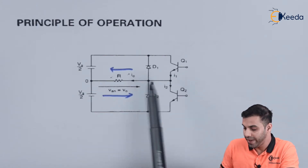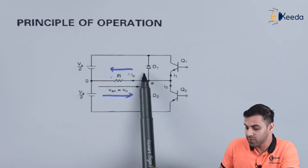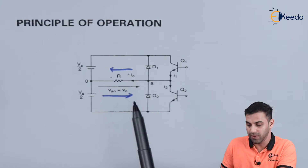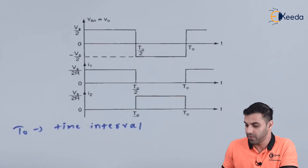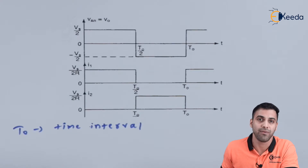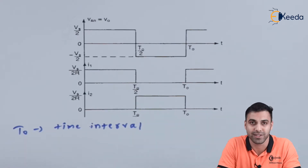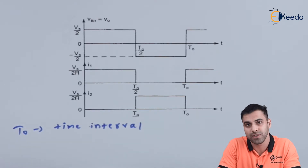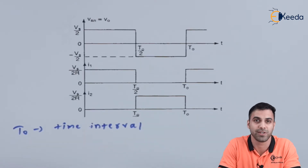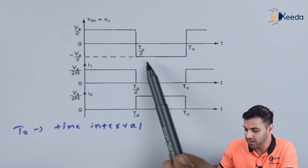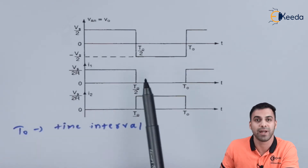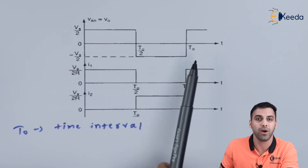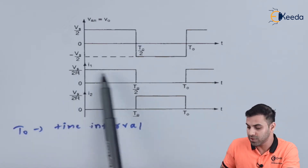From the time interval T0/2 to T0, as the direction of current flow reverses — because we are switching off one transistor and switching on the other — the current flows in the reverse direction. We are getting a reverse voltage across the resistor, which is minus Vs/2, from time T0/2 to T0. Hence the current follows the same waveform.